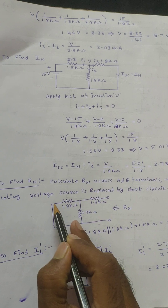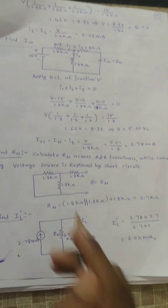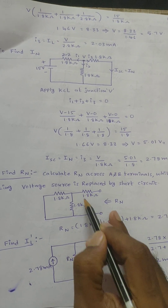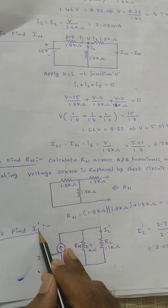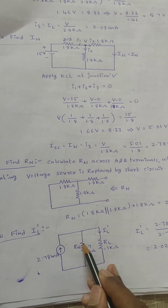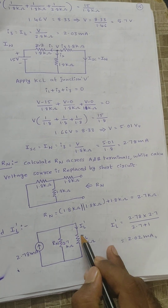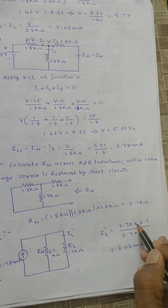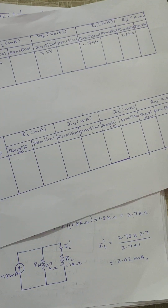To calculate Norton's equivalent resistance, the voltage source is replaced by a short circuit. Across the two terminals: 1.8 kΩ in parallel with 1.8 kΩ gives a resultant in series with another 1.8 kΩ, yielding RN = 2.7 kΩ. Load current IL' is then calculated using the current division rule: IL' = IN × (opposite parallel branch resistance) / (sum of parallel branch elements).